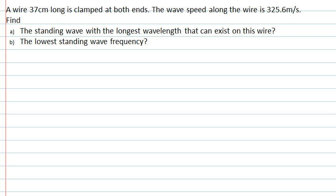This question is about standing waves on a string. Pause the recording and read through the question carefully. We're told that a wire is 37cm long, clamped at both ends, and the wave speed along the wire is 325.6 meters per second.